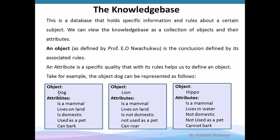A knowledge base is a database, a collection of information of objects and their attributes. For instance, we have hippo: it is a mammal, it lives in water, it is not domestic, it is not used as a pet, it cannot bark. Those are the attributes for a hippo.